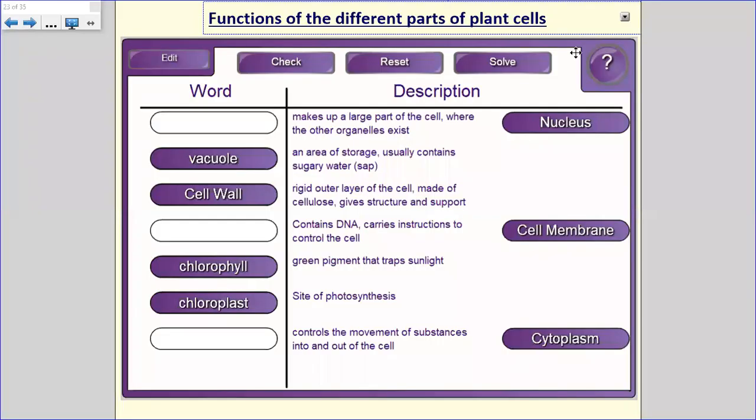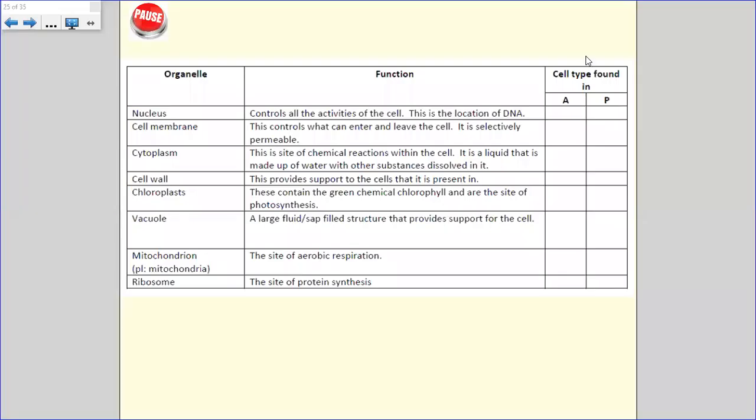Okay, use this information, if you can draw a table to learn the key words, the key parts of a plant cell, and then a description or the function of what these parts do. I've left three of them, nucleus, cell membrane, and cytoplasm. You can do that yourself because you've already learnt what they do in the animal cell.